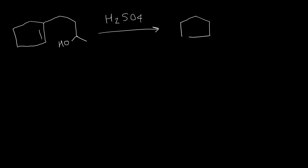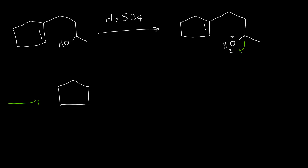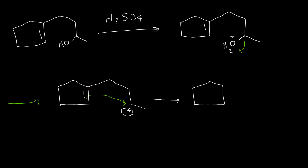Here is the last example for E1 reaction. Again we have protonation of the hydroxy group, then water leaves the structure to form a carbocation. This carbocation has a special rearrangement: when we have a double bond in the structure of a carbocation, sometimes the double bond can move, especially if we can form a five- or six-membered ring. So this double bond attacks here, makes a new bond with this carbon, and now that carbon loses one of its bonds so it becomes positive, giving a tertiary carbocation.